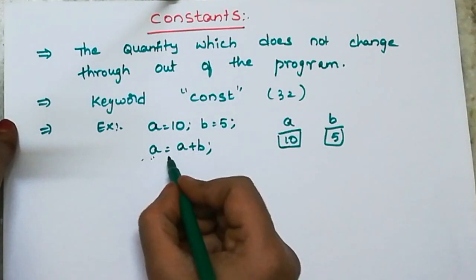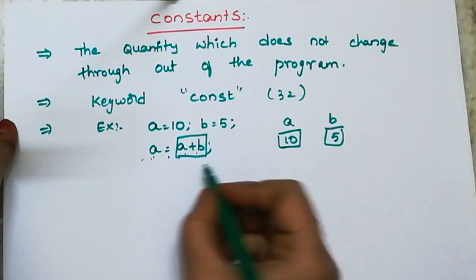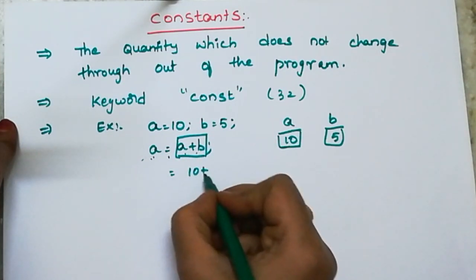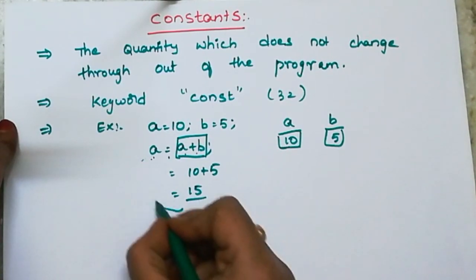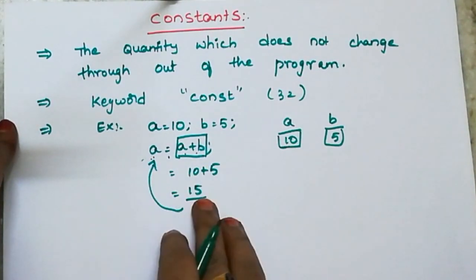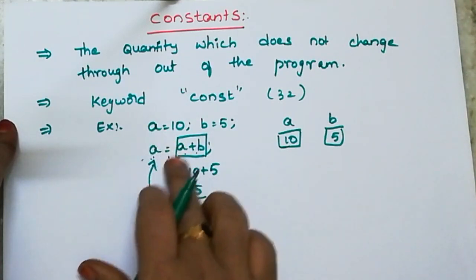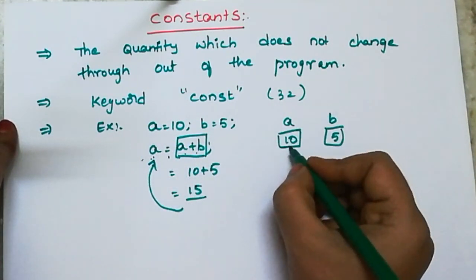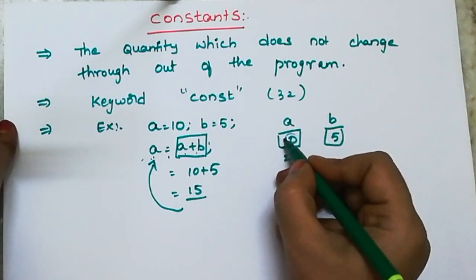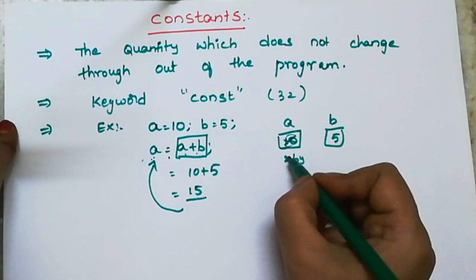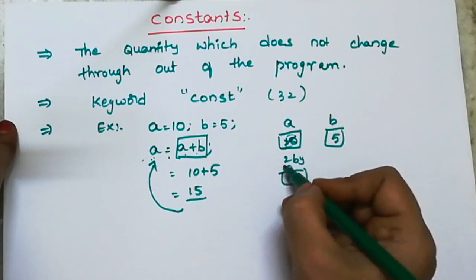a equals a plus b. First, calculate a plus b: 10 plus 5, that is 15. I am storing 15 back into a. So a value is now 15. But the same memory allocation is used — the variable a previously stored 10, and now it stores 15.